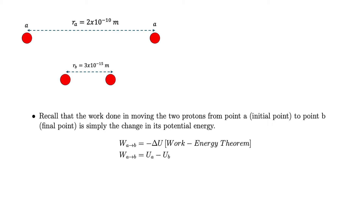From class, the work done is simply the negative change in potential energy — one form of the work-energy theorem. So work from A to B equals the potential energy at A minus the potential energy at B. Note that we are talking about potential energy, not electric potential, so we need to solve for U_A and U_B.